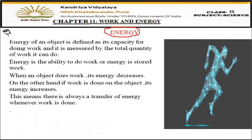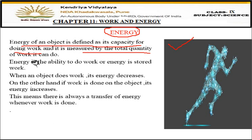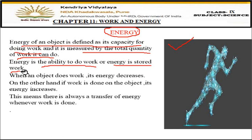Now let's study energy. Energy of an object is defined as its capacity for doing work. If you have energy, you can do work. Energy is measured by the total quantity of work you can do. Energy can also be described as the ability to do work, or as stored work — because energy is the capacity stored inside which we utilize to do work. Any of these definitions can be used for energy.